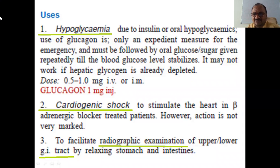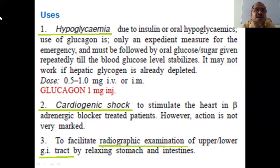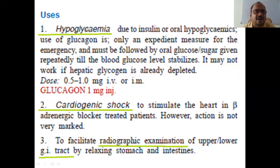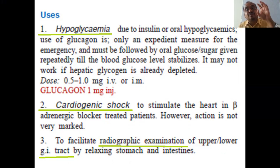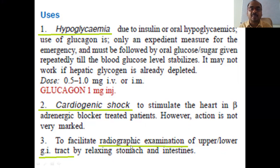Regarding the uses of glucagon: the first use is in hypoglycemia. When a patient has very low blood sugar levels, they will fall down. You must maintain a minimum glucose level in the body. In such cases — called hypoglycemia — this hormone is used. Glucagon injection is used in the treatment of hypoglycemia to immediately increase blood sugar levels. It is also used in cardiogenic shock — a shock generated from the heart — to stimulate the heart, particularly in beta-adrenergic blocker-treated patients.